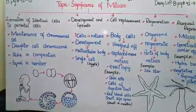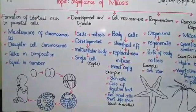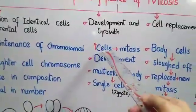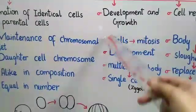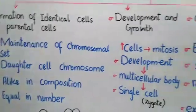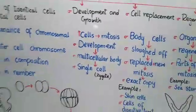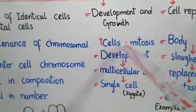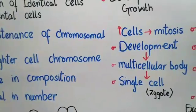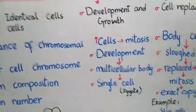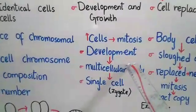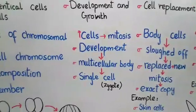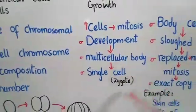The second significance is development and growth. Mitosis increases the number of cells within an organism repeatedly. This is the basis of development of a multicellular body from a single cell. Because of mitosis, a single cell develops into a multicellular body consisting of many cells. This single cell that develops into a multicellular body is called the zygote.